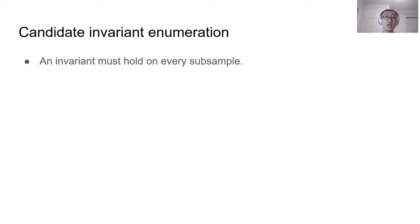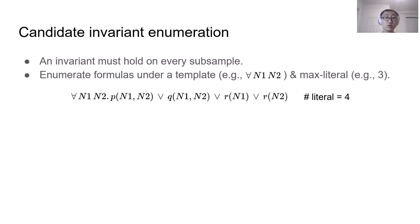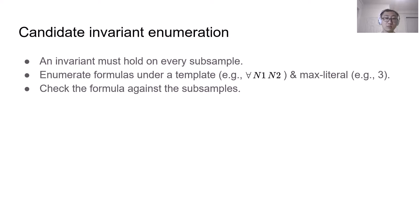Now we move on to the second module, candidate invariant enumeration. The key property here is that an invariant must hold on every subsample. We enumerate all possible formulas under a template and a maximum literal. Here we show a formula with four literals. If the max literal is set to 3, then it will not be enumerated. We check the enumerated formula against the subsamples. If a formula is satisfied by all subsamples, it will be added to the candidate invariant set.